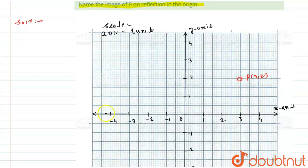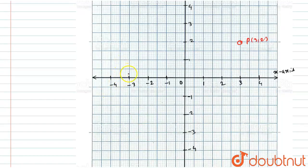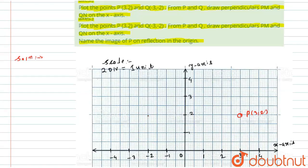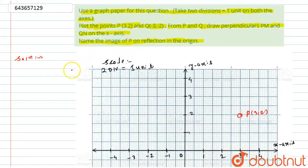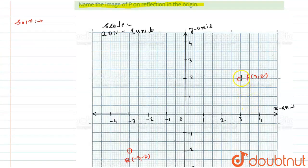Similarly, if I try to locate point Q, it will be onto the x-axis at -3 and onto the y-axis at -2. So it will be here with the coordinates Q(-3, -2). Now the next thing we have to do is draw perpendiculars PM and QN onto the x-axis. Let's draw a perpendicular from point P onto the x-axis, and similarly I will draw a perpendicular line from point Q onto the x-axis.